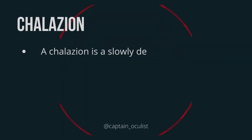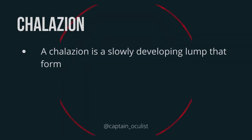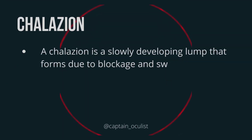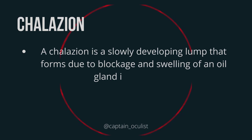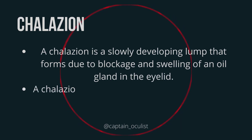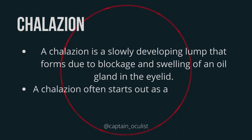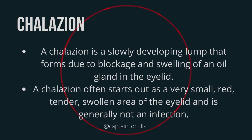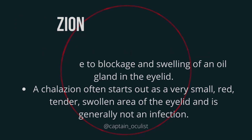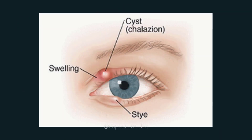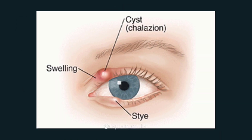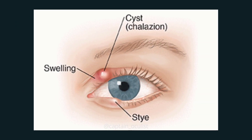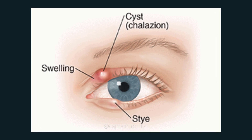What is chalazion? A chalazion is a slowly developing lump that forms due to blockage and swelling of an oil gland in the eyelid. It often starts out as a very small, red, tender, swollen area of the eyelid and is generally not an infection.